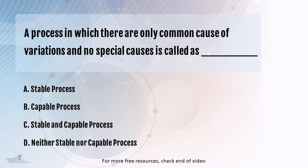On the other hand, if the process is varying and every process is bound to vary naturally, and that variation is within the control limits, then that's what we call as non-assignable or common cause of variation.